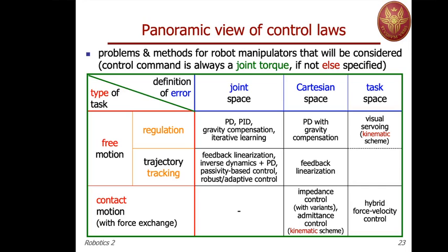Trajectory tracking instead requires continuously following a trajectory specified with a geometric path and a timing law. When motion is in contact with the environment, the robot is constrained: it cannot enter the surface of the environment, and it cannot detach from the surface — otherwise it falls back into free motion. While moving in contact, it can also exchange forces with the environment. These are the basic elementary tasks, which can be combined to realize higher-level behaviors.